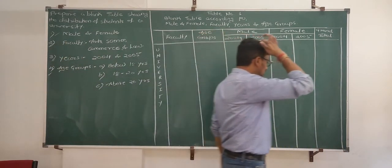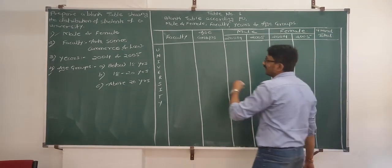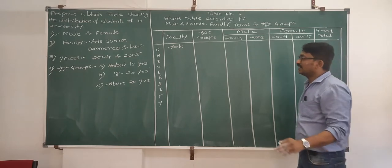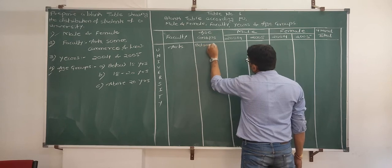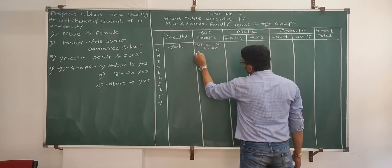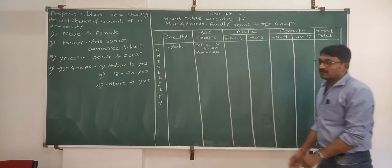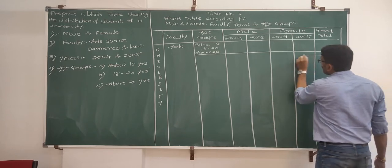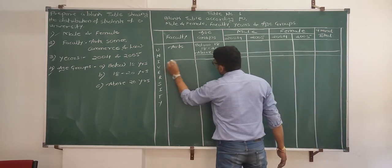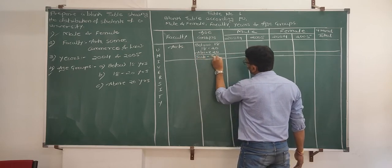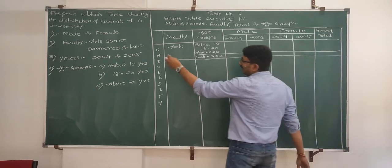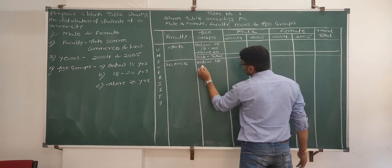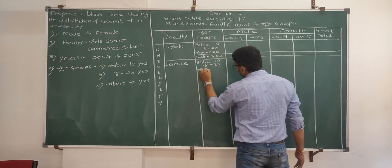Now we will start the rows one by one. The first faculty is arts, so I will write arts here. The procedure is the same — for each and every faculty, write all the age groups: below 18, 18 to 20, above 20. Once you finish with all the age groups, go for subtotal. The second faculty is science. Again write below 18, 18 to 20, above 20.